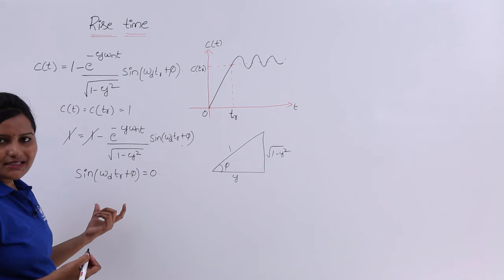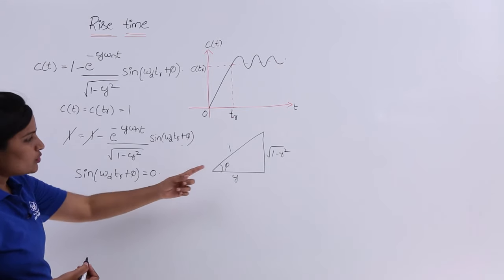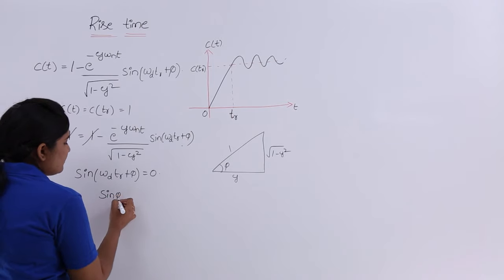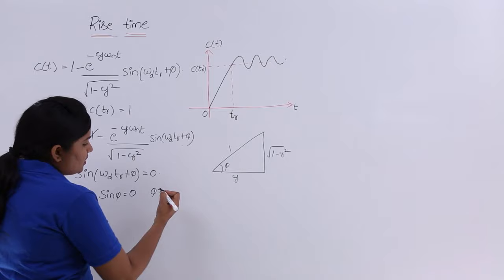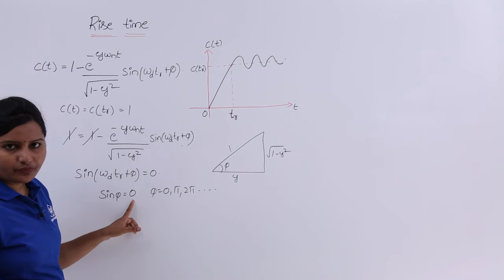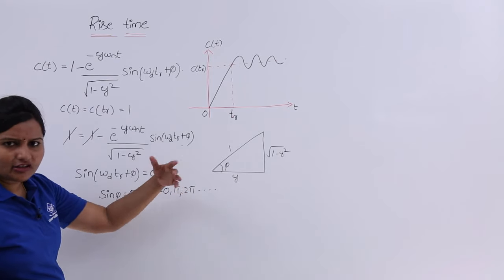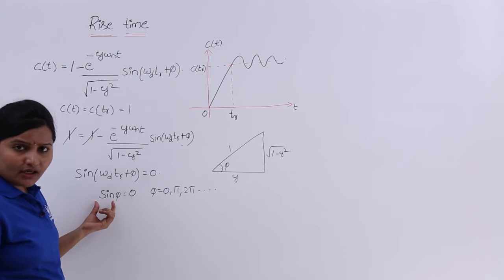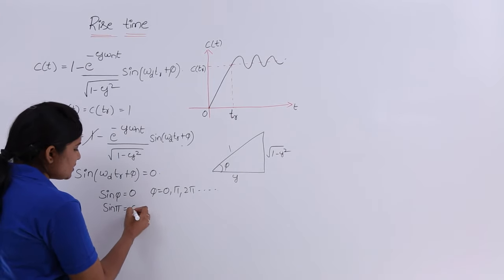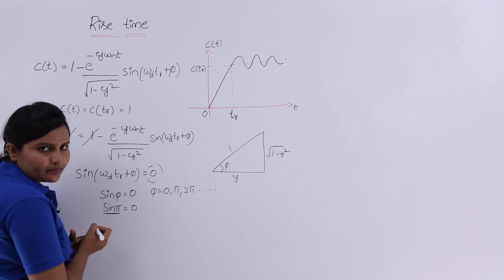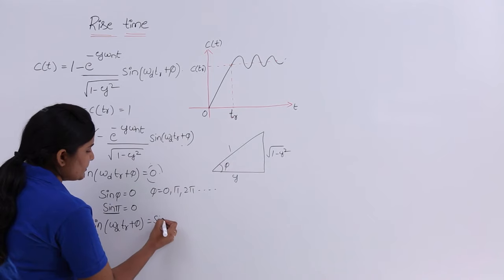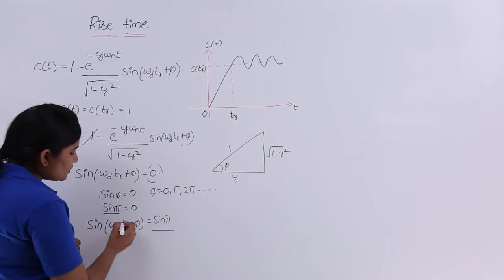We know that φ = tan⁻¹(√(1−ζ²) / ζ). Since sin(φ) = 0 when φ = 0, π, 2π, or any multiple of π, I am going to consider φ as π. So sin(φ) = 0, and substituting into the equation: sin(ωd·tᵣ + φ) = sin(π). Comparing both sides, this angle is equivalent to π.